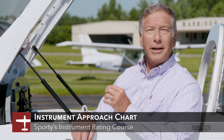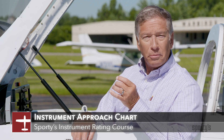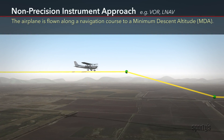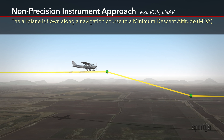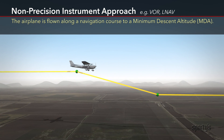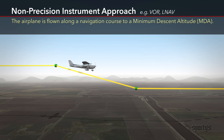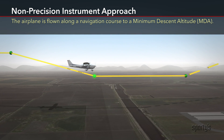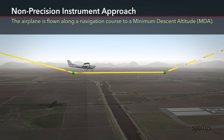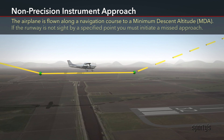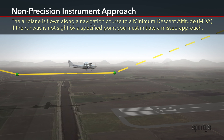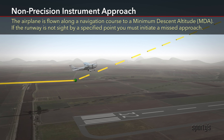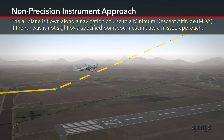Instrument approaches are divided into precision, non-precision, and approaches with vertical guidance. A non-precision approach is a clearance to descend at a fix to an MSL altitude called a minimum descent altitude, or MDA. The airplane is then flown in level flight at the MDA with the pilot hunting for the airport. If the airport or runway is not in sight at a certain time or point, the hunting license expires, and the missed approach comes next.